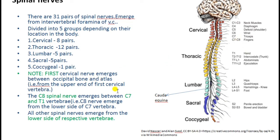There are seven cervical vertebrae but eight cervical spinal nerves. The eighth cervical spinal nerve, C8, emerges between the C7 vertebra and the first thoracic vertebra. In other words, C8 comes from below the seventh cervical vertebra, while C1 to C7 each come from above their respective vertebra.